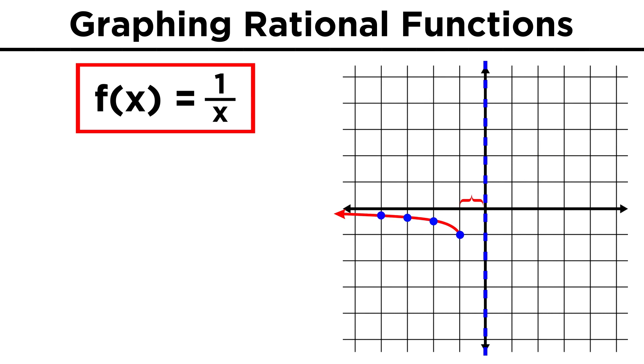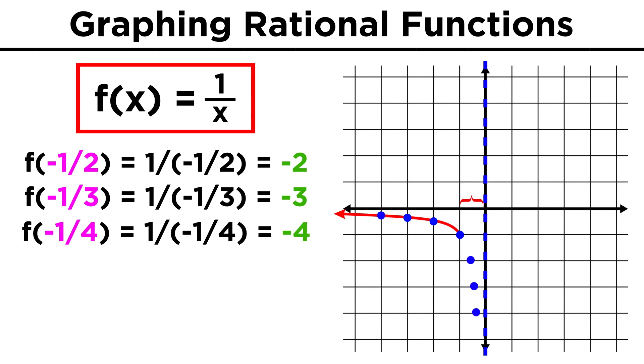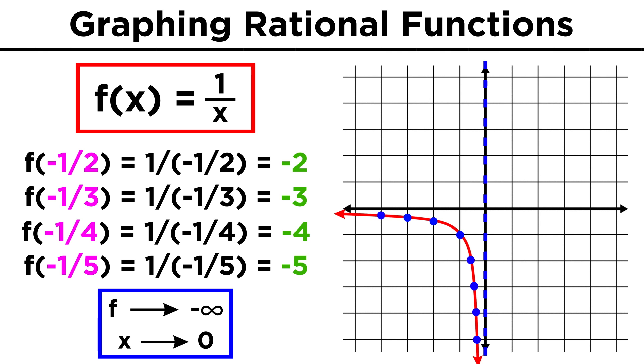In this tiny interval, from negative one to zero, we can see that plugging in fractions of negative one will give us very big negative numbers that decrease rapidly, heading towards negative infinity as x approaches zero, so that will look like this.